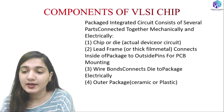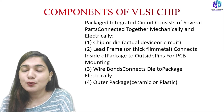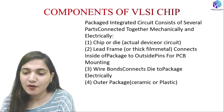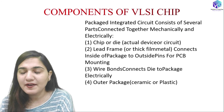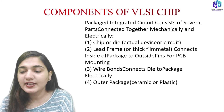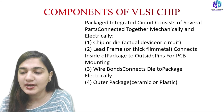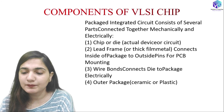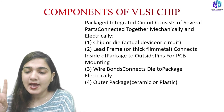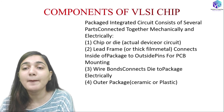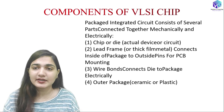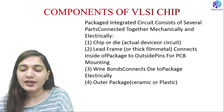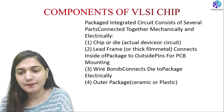A packaged IC consists of several parts connected mechanically and electrically. First is the chip or die, which is the actual device or circuit. Then we have the lead frame or thick film metal, which connects the inside of the package to the outside pins for PCB mounting. Wire bonds connect the die to the package electrically, supplying current from the external environment to the IC. The outer package is composed of either ceramic or plastic material.